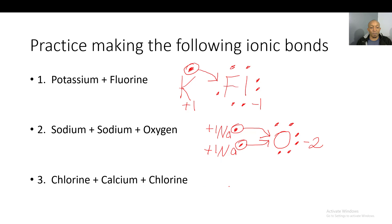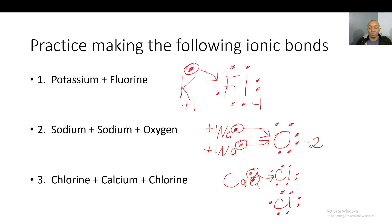Last: chlorine plus calcium plus chlorine — that is CaCl₂. Calcium has two valence electrons and each chlorine has seven valence electrons. Each chlorine needs one valence electron, so calcium gives away one electron to each chlorine. Calcium ends up with a plus two charge. Each chlorine gains one electron and gets a negative one charge. Plus two minus one minus one gives zero — they balance.